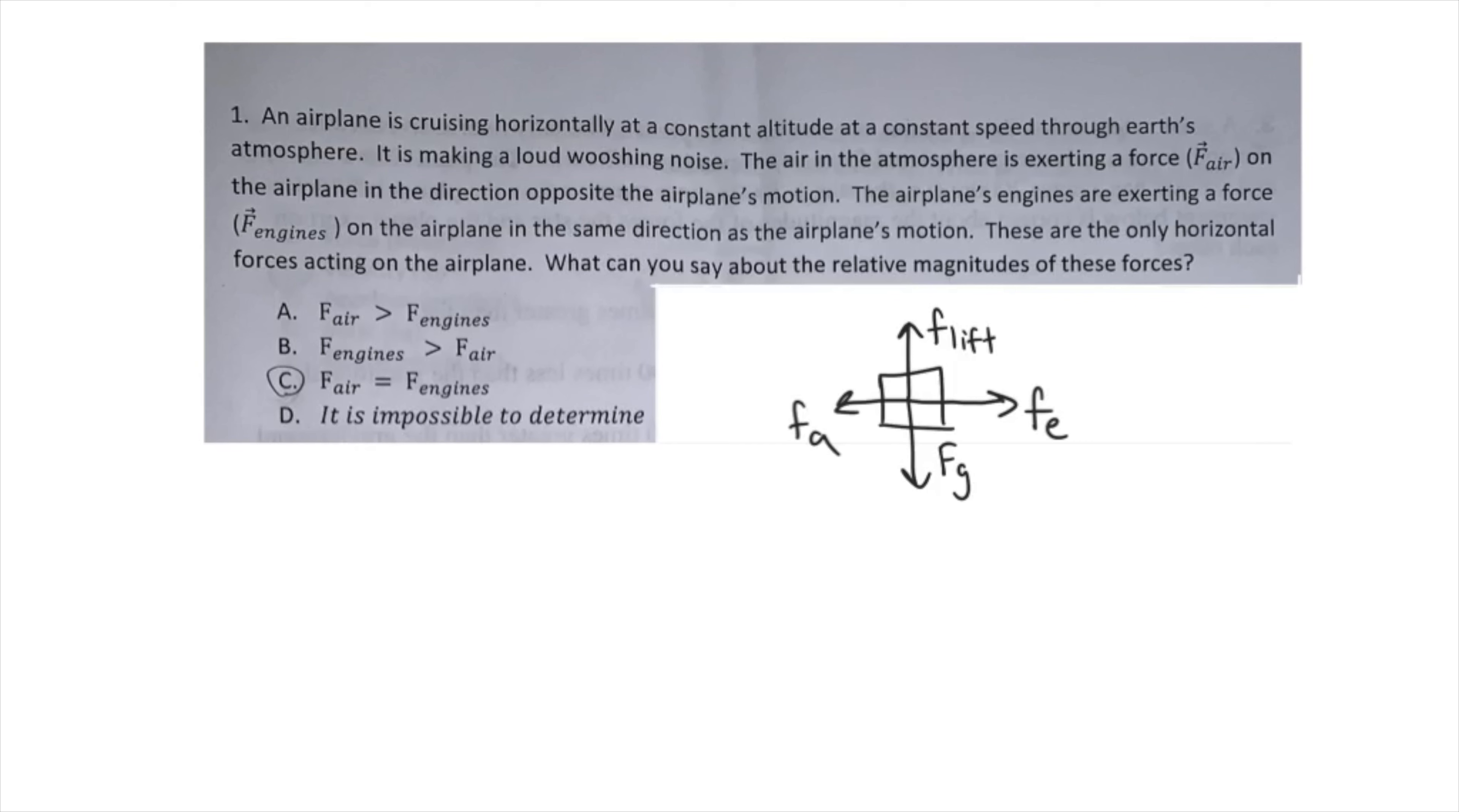Now one thing you'll notice if you read the wording more closely is that it's traveling at constant altitude and constant speed. This means that there's no net force acting on the airplane. Therefore, the answer is C. The force of the air equals the force of the engines because it's moving at constant speed.